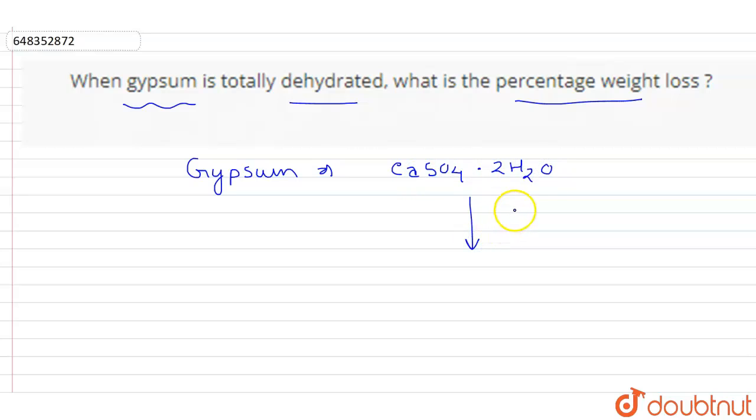So when this will be dehydrated, dehydrated means complete loss of water, the formula will be CaSO4 only.